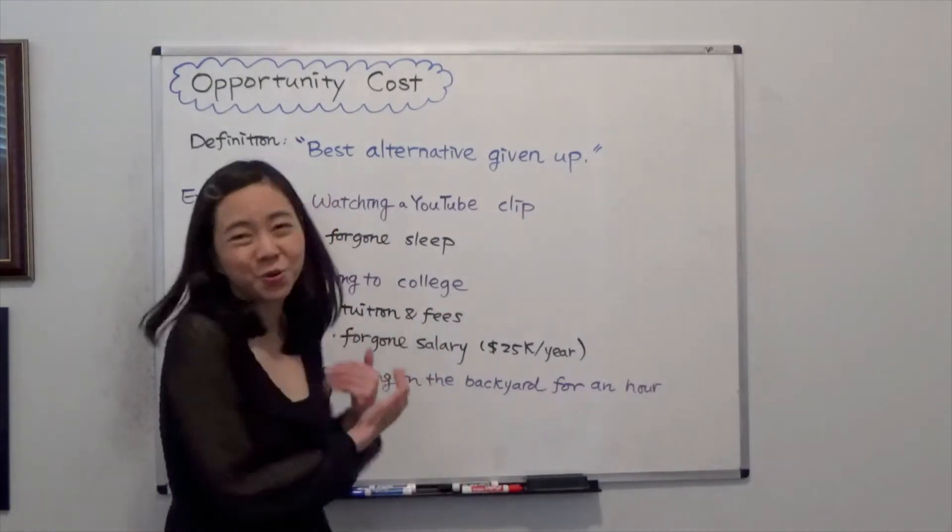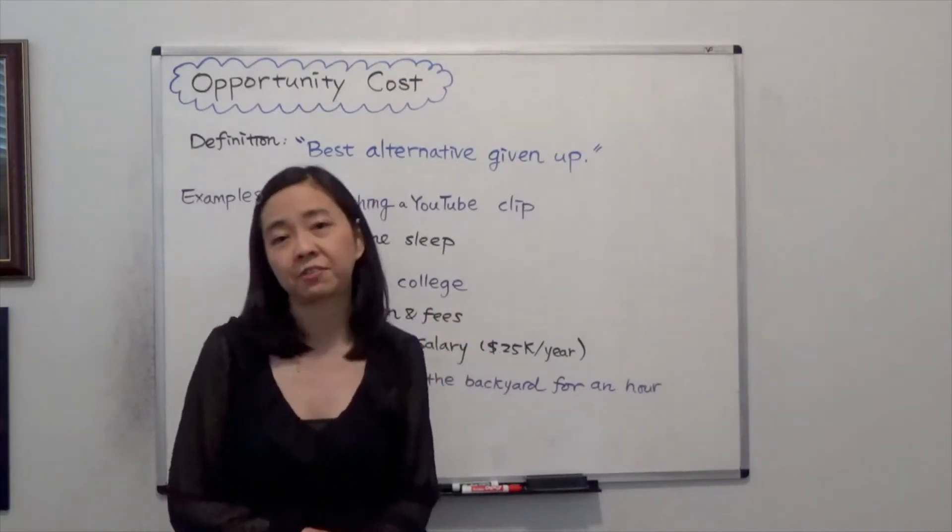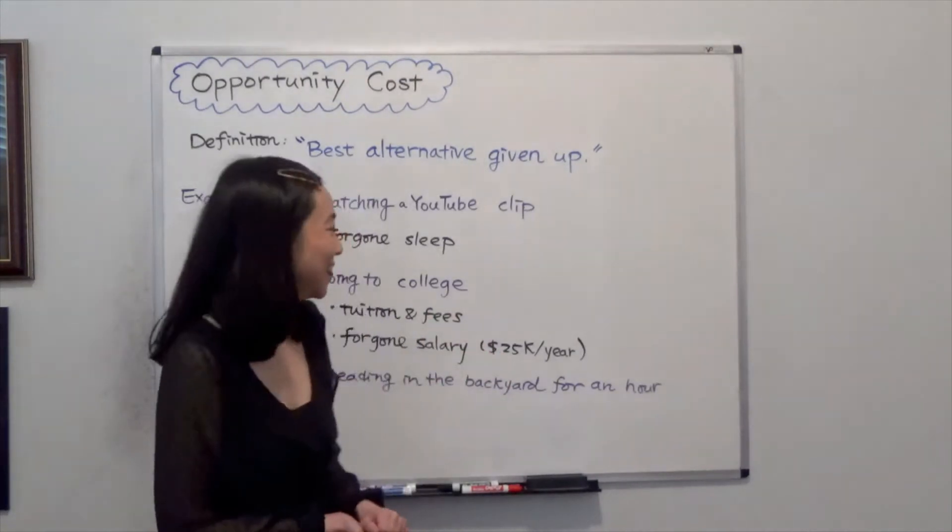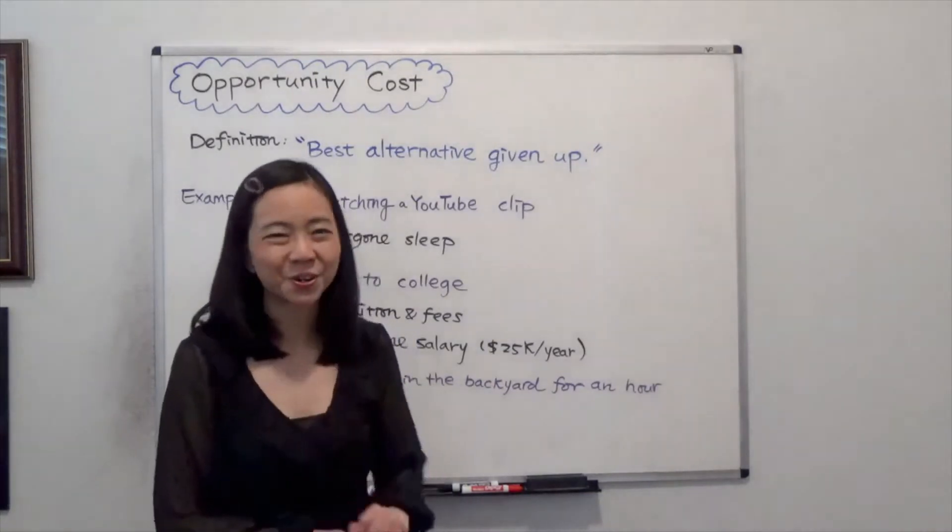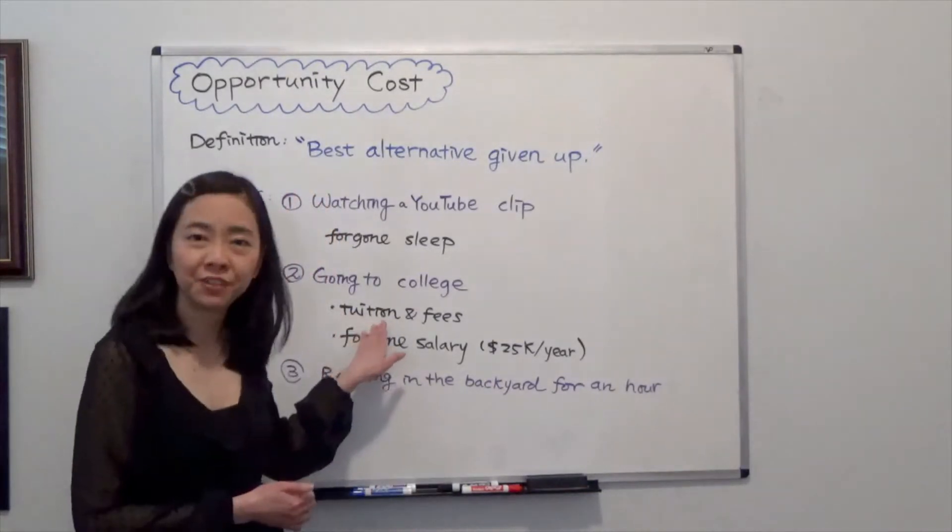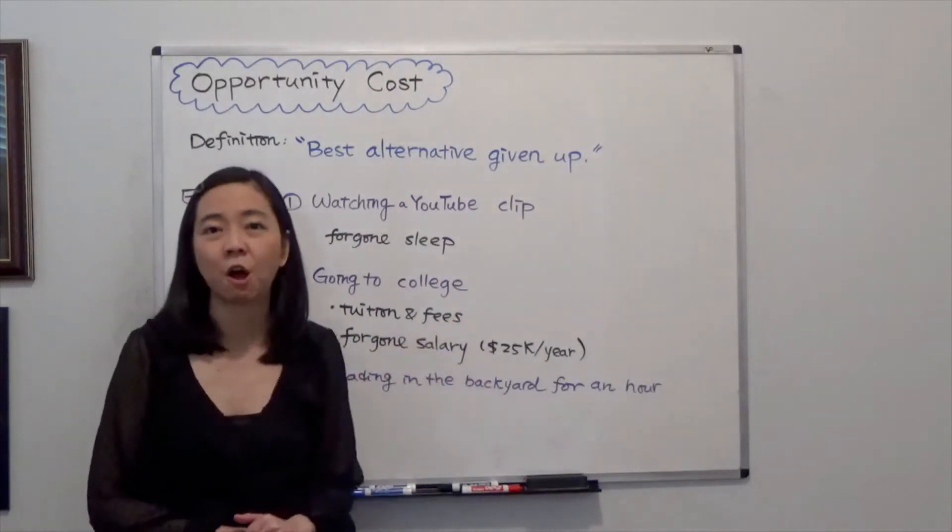Let's say that if you were not going to college, your full-time job will pay you $25,000 per year. Then the opportunity cost of going to college for one year will be the tuition and fees and the foregone salary of $25,000 per year.